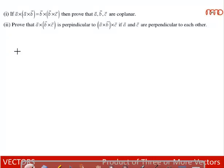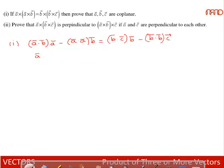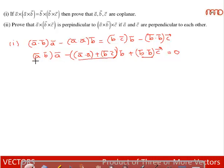New problem: If a×(a×b) = b×(b×c), prove that a, b, c are coplanar. Expanding: (a·b)ā − (a·a)b̄ = (b·c)b̄ − (b·b)c̄. This gives a linear combination of vectors ā, b̄, and c̄ equal to zero. So the three vectors are linearly dependent — there exist not-all-zero scalars such that λ₁a + λ₂b + λ₃c = 0 — meaning a, b, c are coplanar.